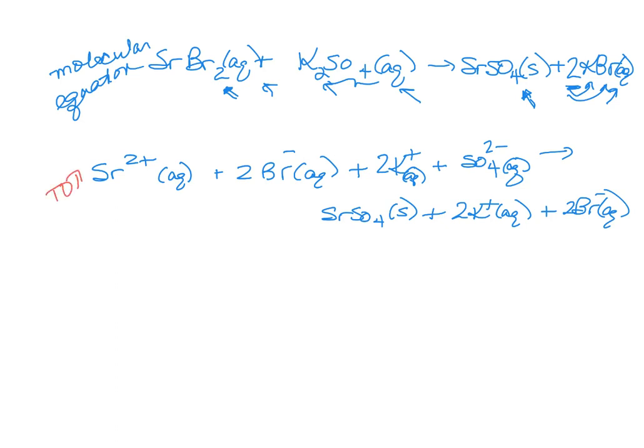To get to the net ionic, we cross out what is the same on both sides of the arrow, and they have to be identically the same. So let's see, what can I cross out? There are two bromides on both sides, and there are two potassium on both sides. And that's it. That's the only thing that match exactly. So, when I rewrite what was not crossed out, I get the net ionic equation.